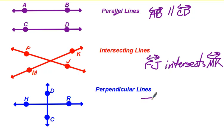Now perpendicular lines do have their own symbol. You would say line HR is perpendicular to, and this is the symbol, it's an upside down capital T. So line HR is perpendicular to line DC.